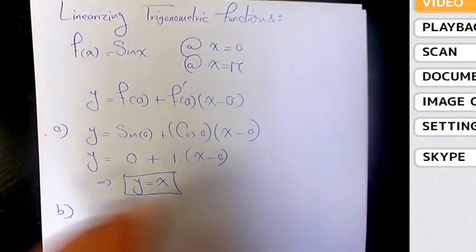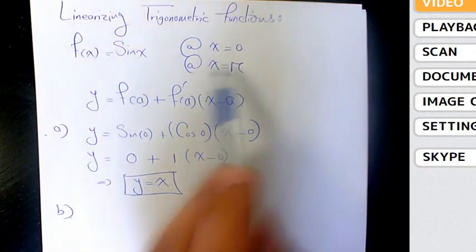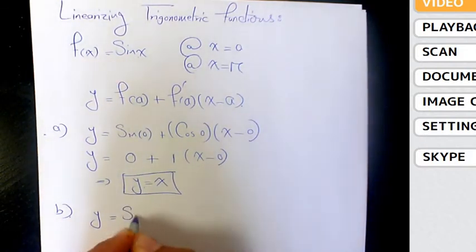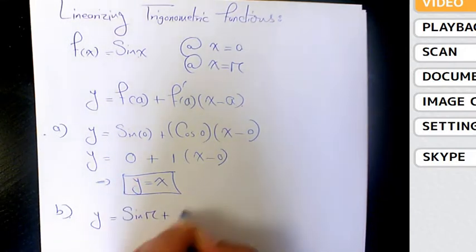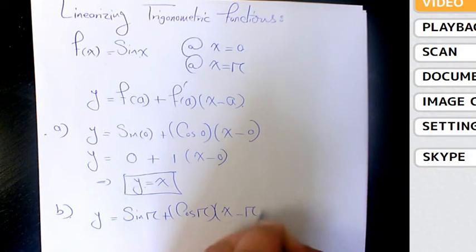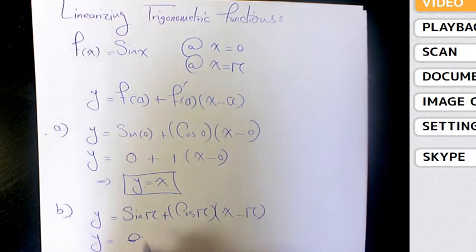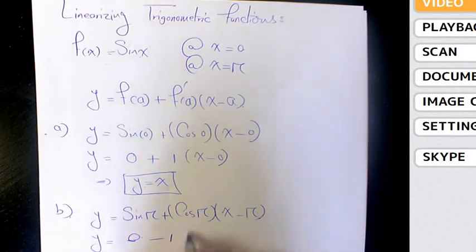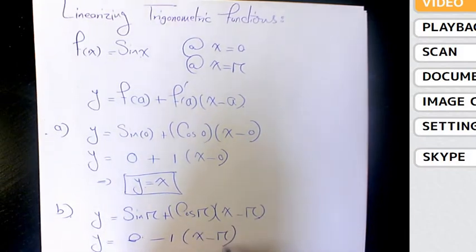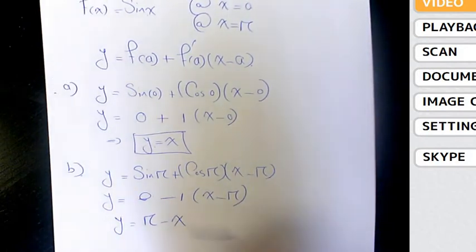Next example: we need to do the same function but at a different point. So it's going to be y = sin(π) + cos(π)(x - π). Sin(π) is actually 0, and cos(π) is -1, so we get 0 + (-1)(x - π), which when you simplify it is π - x.